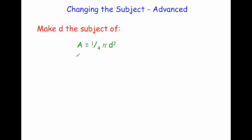Let's times through by 4. If we multiply both sides by 4, the left hand side will become 4a. On the right hand side, a quarter times 4 is 1, so we'll be left with pi d squared.